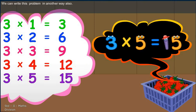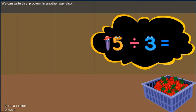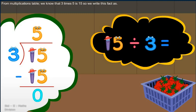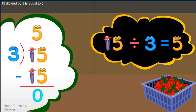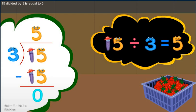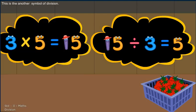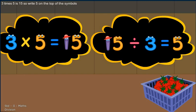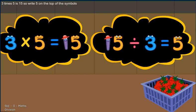We can write this problem in another way also. This is the symbol of division. From multiplications table, we know that 3 times 5 is 15. So we write this fact as 15 divided by 3 is equal to 5. This is the another symbol of division. And from multiplication table, we know that 3 times 5 is 15. So write 5 on the top of the symbols.